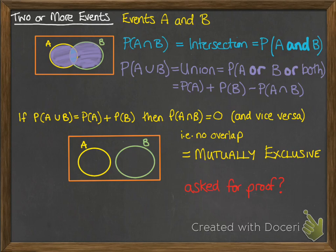Now, if you're asked to prove this, you would just need to show one of these things. You can either show this thing here, that the probability of the union is equal to the probability of A plus B, or you can show the probability of the intersection is equal to zero.